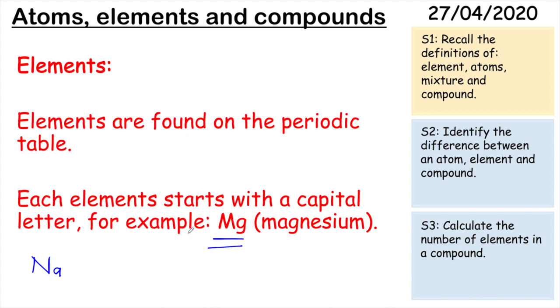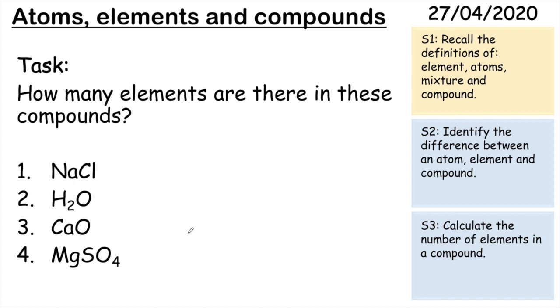I'm going to have a look at some compounds now. These are different elements bonded together. So you're going to have a go at picking out how many elements there are in these compounds. And I want you to do this by looking for the capital letters. So every capital letter remember means a new element. So pause the video and have a go.